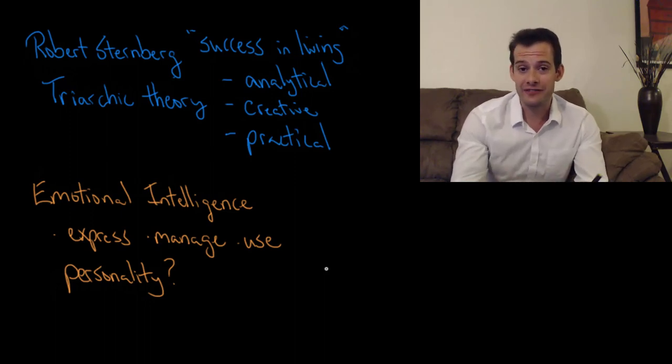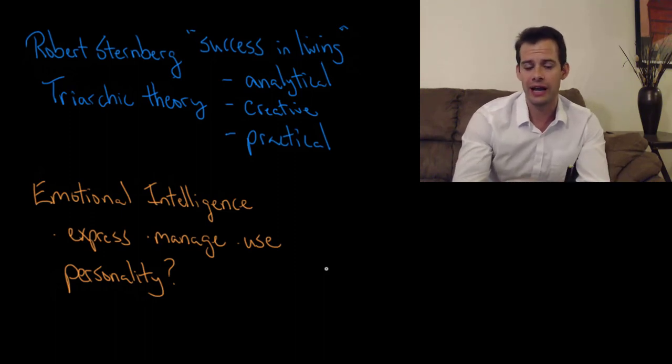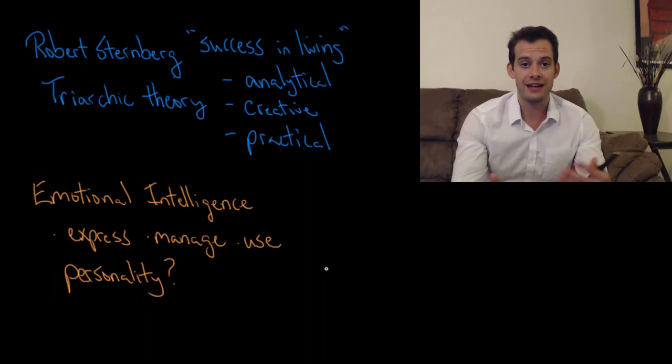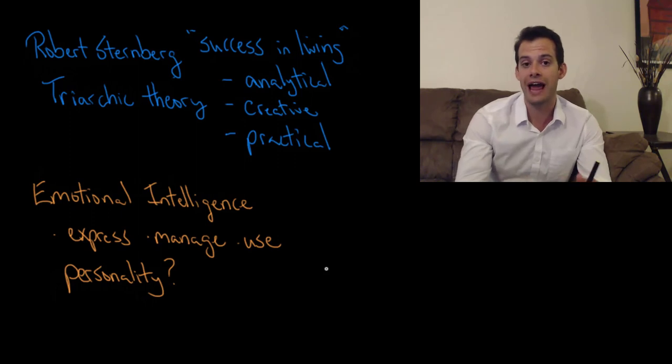Hopefully what you get from this video is you see that intelligence is really complicated. It's hard to come up with clear definitions and I don't have a clear answer for you in what should be considered part of intelligence and what shouldn't. But there's a lot of different ways of thinking about it and all these different researchers have proposed these different approaches to defining intelligence. Nevertheless we want to try to assess intelligence and that's what we're going to look at in the next video.